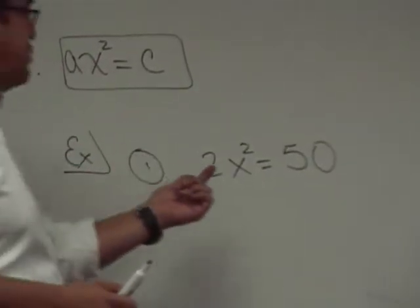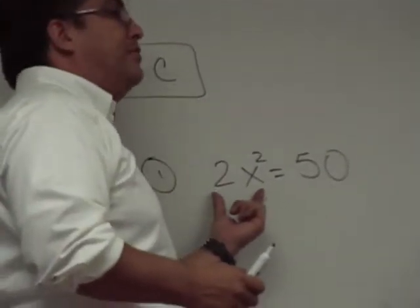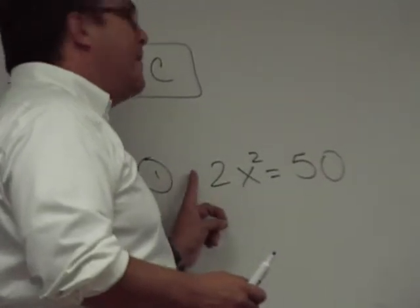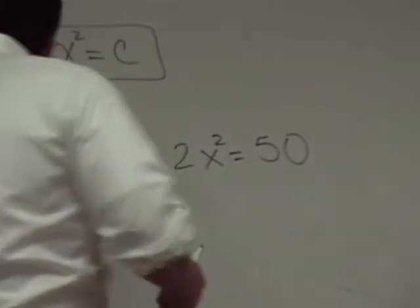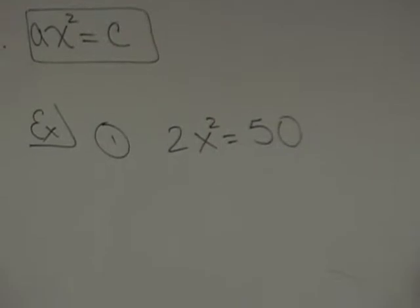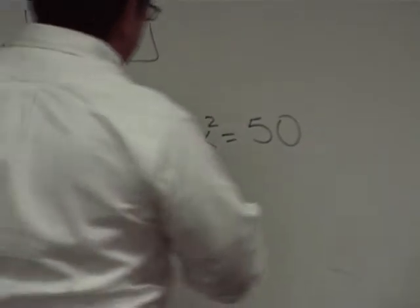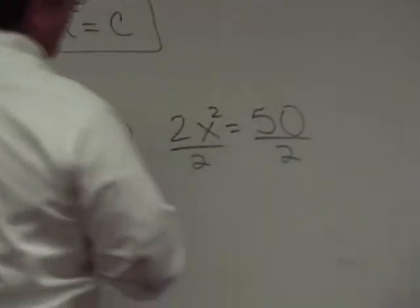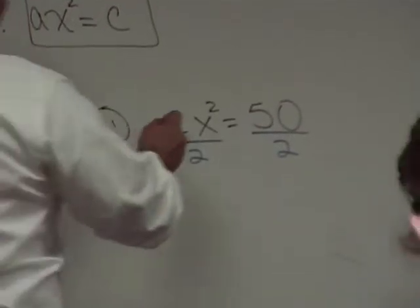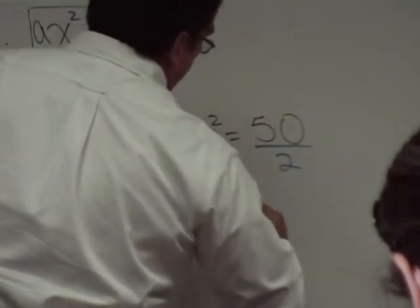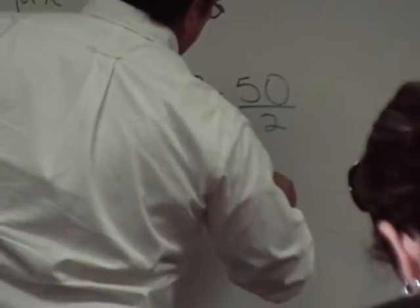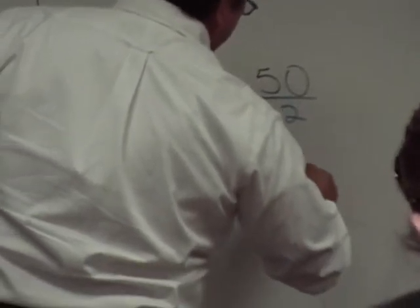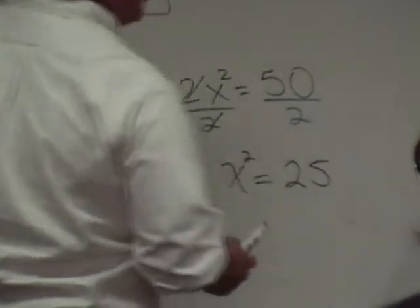So what we've done in the past to get x by itself is we get rid of coefficients. So how do I cancel this 2? I'm going to divide by 2. Divide by 2 both sides of the equation. What do I get here? X squared equals 25.